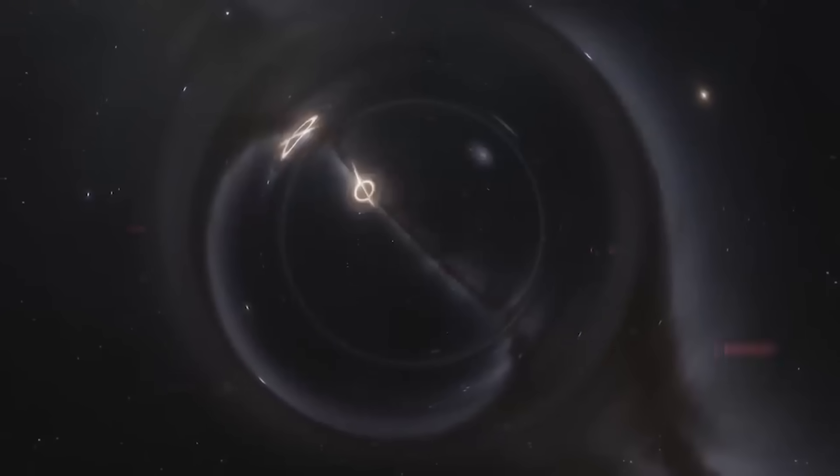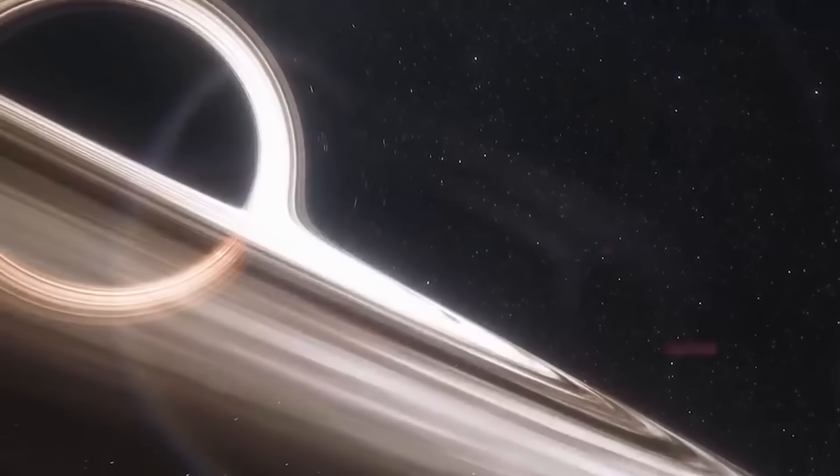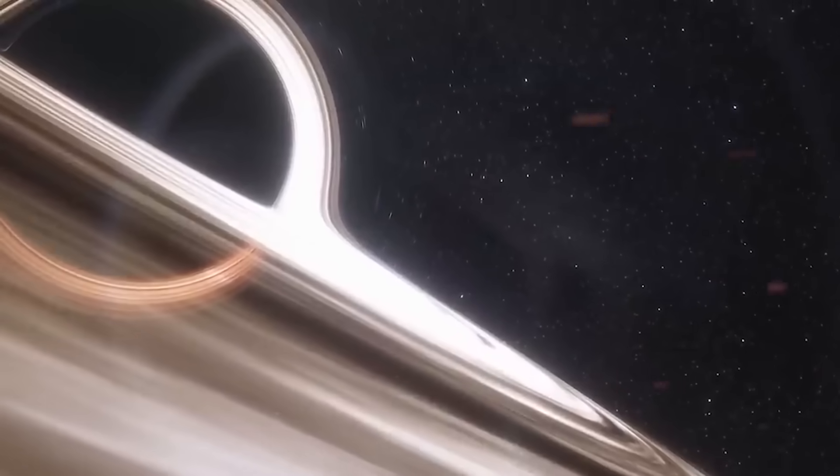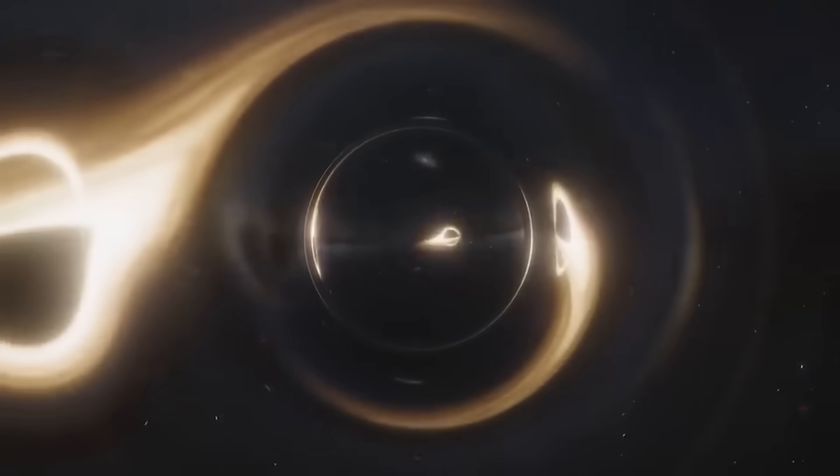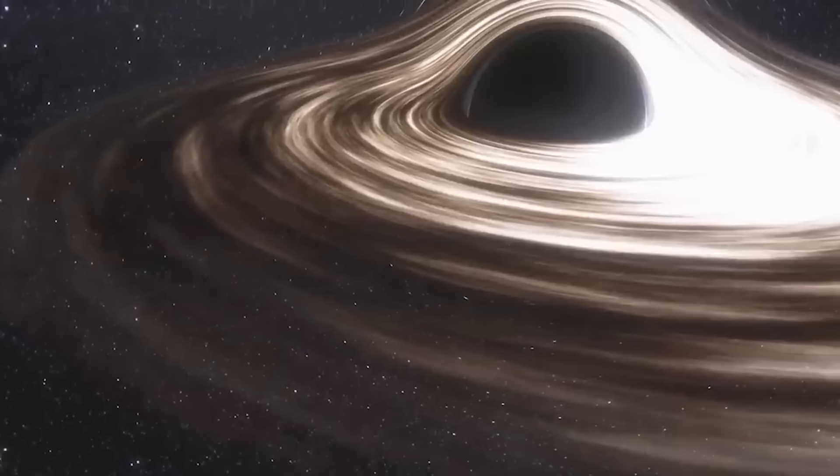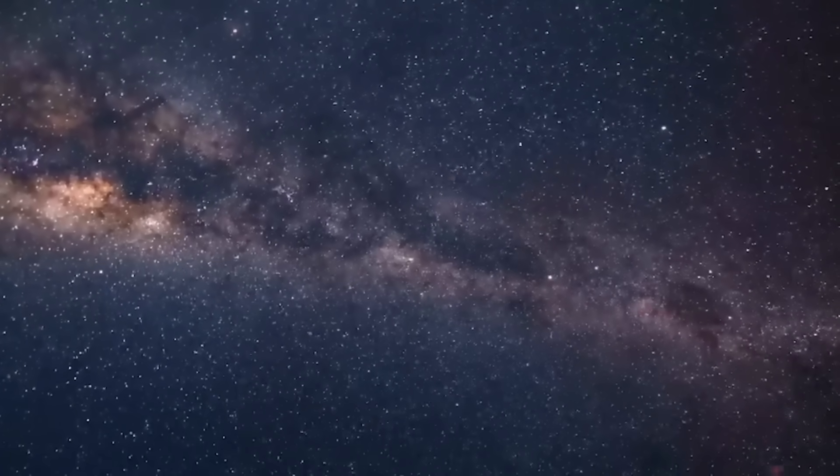Furthermore, there are observations of supermassive black holes that existed in the early universe, with masses ranging from millions to billions of times that of our Sun. Understanding how these black holes attain such enormous sizes in a relatively short period of time is an ongoing challenge for scientists. One hypothesis suggests that they may have been formed through the merging of smaller black holes as they absorbed matter and combined with other black holes. However, this scenario requires the presence of stars and matter falling into these black holes.